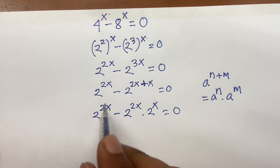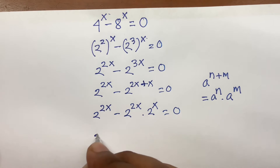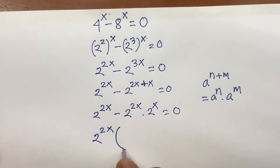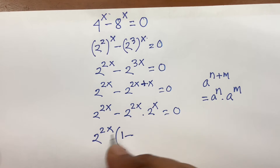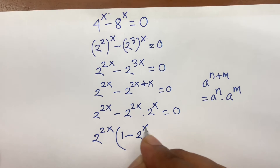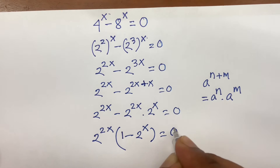Then, 2 to the power 2x is common. So, 2 to the power 2x times — this divided by this — here is 1 minus 2 to the power x is equal to 0.